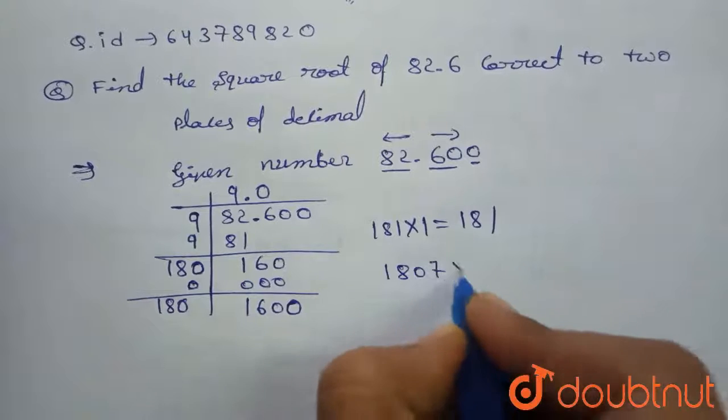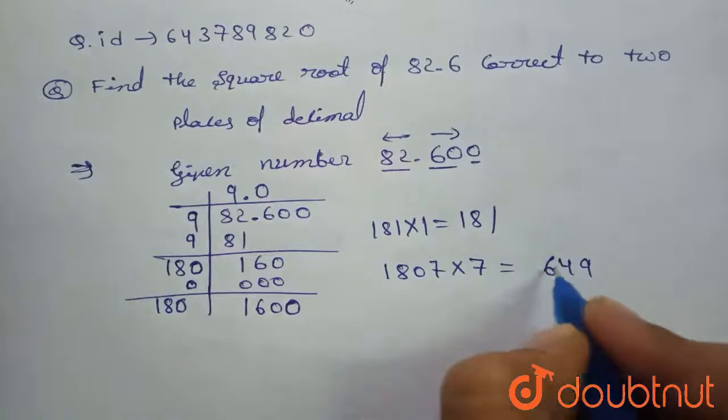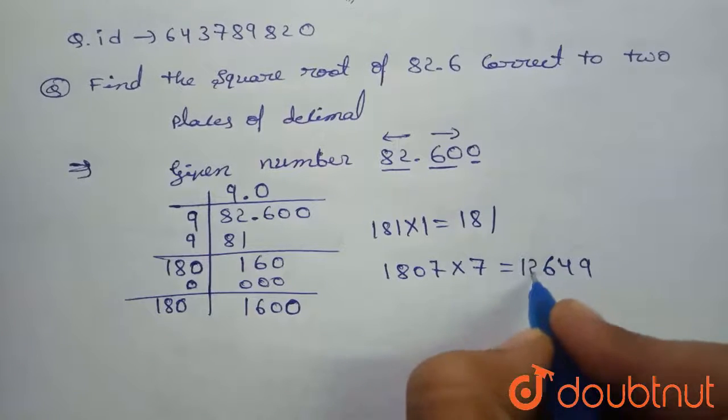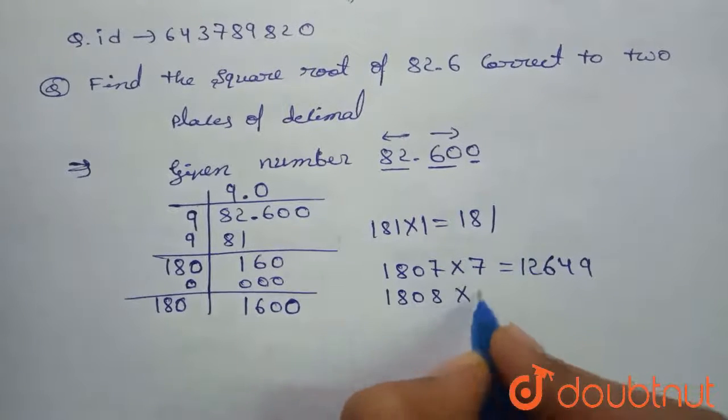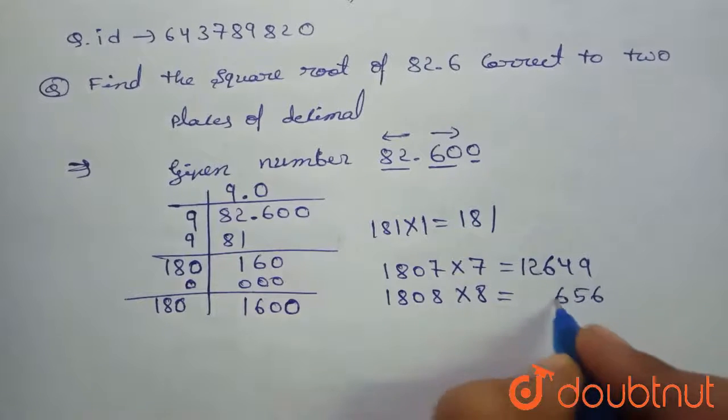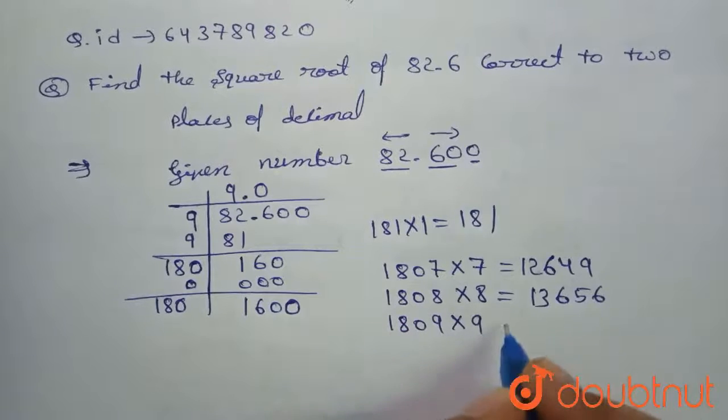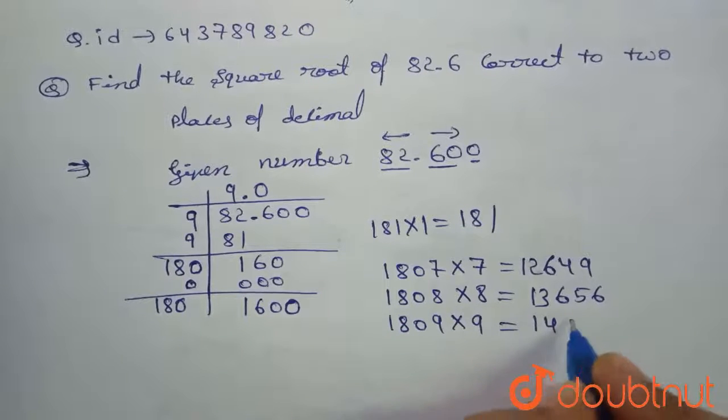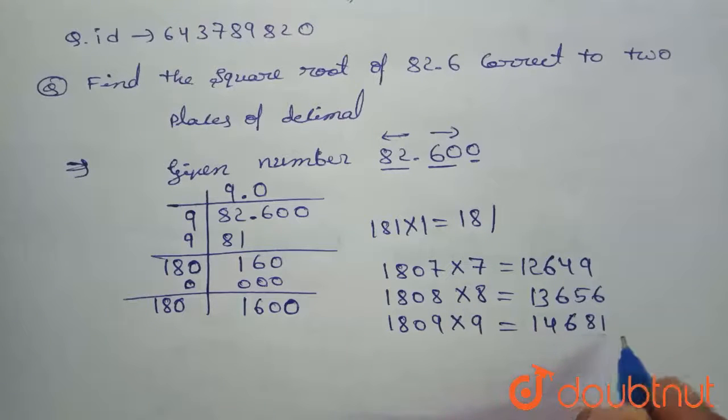1807 into 7 is equal to 49, 56. 1808 into 8 is 56. 1809 into 9 is 14681.